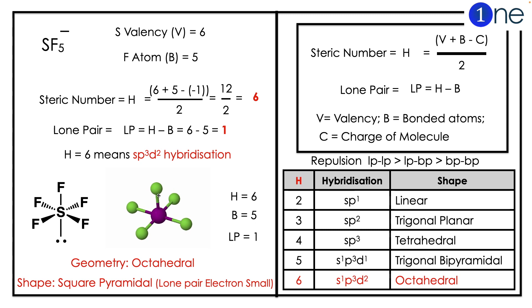Lone pair will be H minus B, which is 6 minus 5 equals 1. So H6 means sp3d2 hybridization with lone pair. So H6 means octahedral structure. With the lone pair, it becomes square pyramidal.